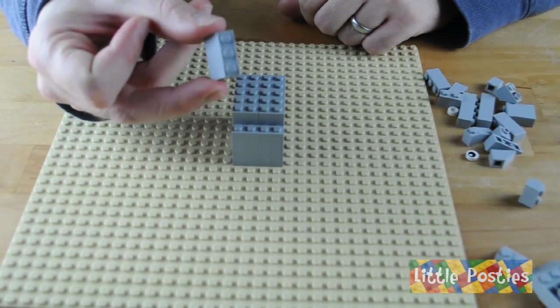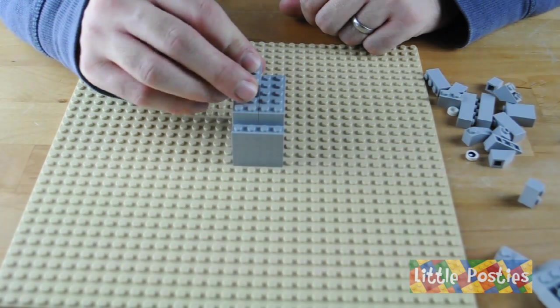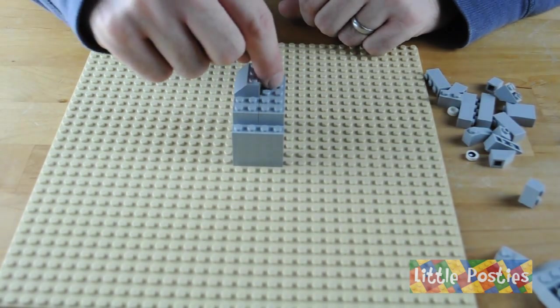Then we're going to grab a 2x3 brick, and then we're going to grab a 2x3 slope. We're going to go at the back. Again it locks these two bricks in here.